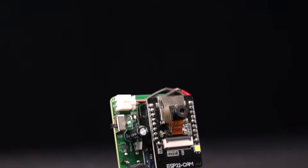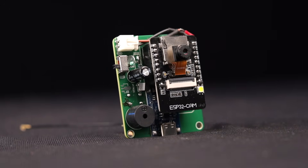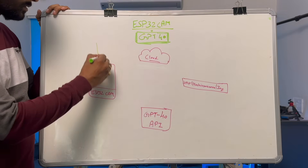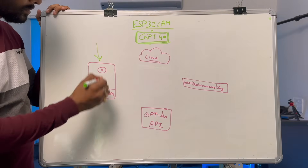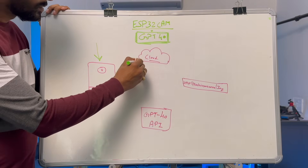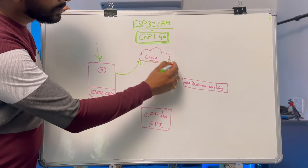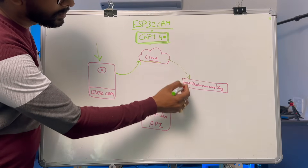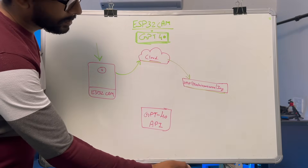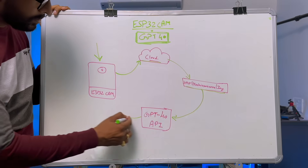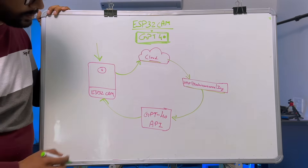In this video we're going to try to make that project with the help of the ESP32-CAM board. One approach is to click the image using the ESP32-CAM board, upload it to a cloud platform, get the URL of that image, and finally call the GPT-4o API by providing that URL, as we did before.